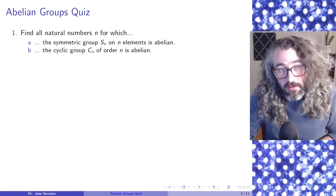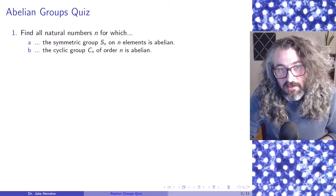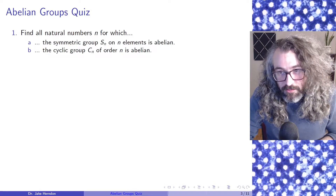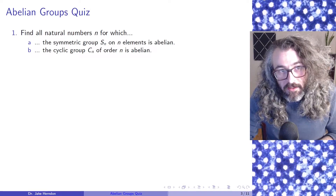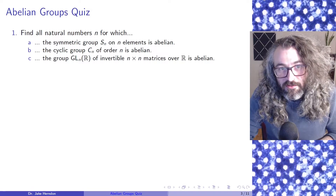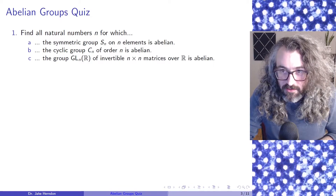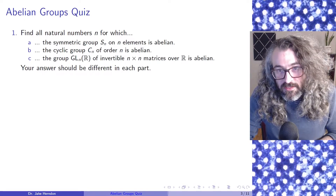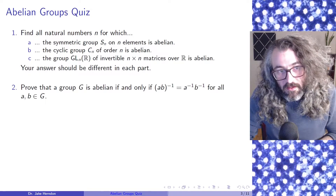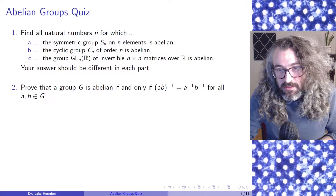Problem 1, Part B: Find all natural numbers n for which the cyclic group of order n is abelian. Problem 1, Part C: Find all natural numbers n for which the group of invertible n by n matrices over ℝ is abelian. Your answer should be different in each part. Problem 2: Prove that a group G is abelian if and only if the inverse of A times B is equal to the inverse of A times the inverse of B, for all A and B in the group.